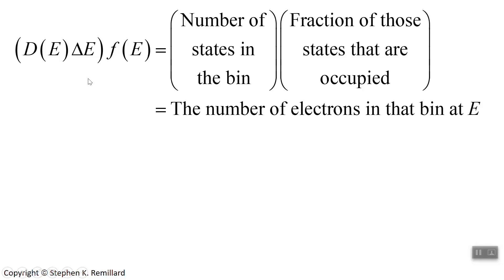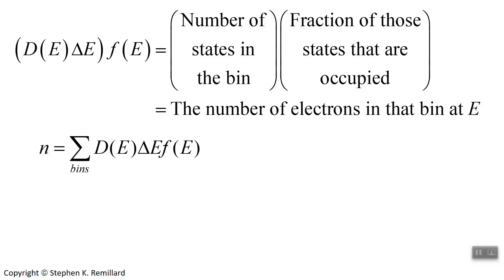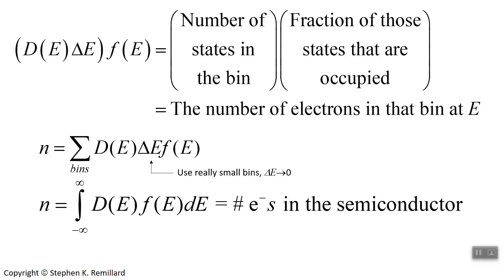The bin is size delta E. D of E times delta E is the number of states in the bin, and F of E is the fraction of the states that are occupied. The sum of the density of states D of E times the bin size — which gives you the number of states in each bin — times the fraction of those states that are occupied, summed over all bins, gives you all of the electrons in the bulk semiconductor. You should recognize this as an integral. If I take the limit as delta E gets very small, I can replace the summation sign with an integral sign, and I'll have the integral of D of E times F of E integrated over energy. That's the total number of electrons in that sample of conductive material.